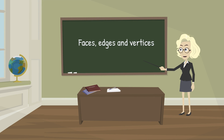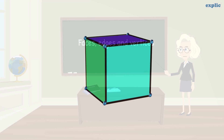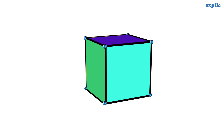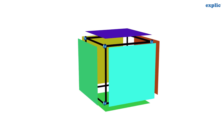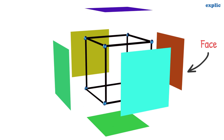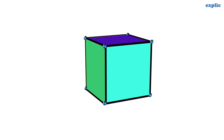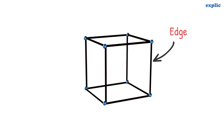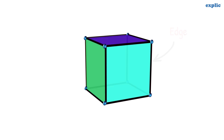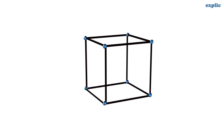Let's learn about different parts of a three dimensional shape. A three dimensional shape is made of different surfaces, which are called faces or bounding surfaces. There are six faces in a cuboid. The line segment where two faces meet is called an edge. There are twelve edges in a cuboid. The meeting point of three edges is called a vertex. There are eight vertices in a cuboid.